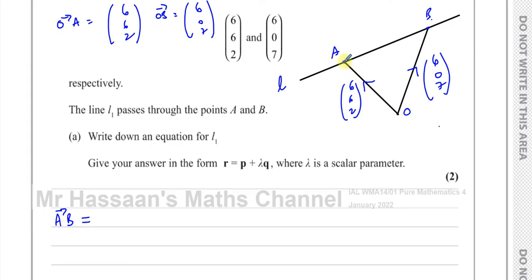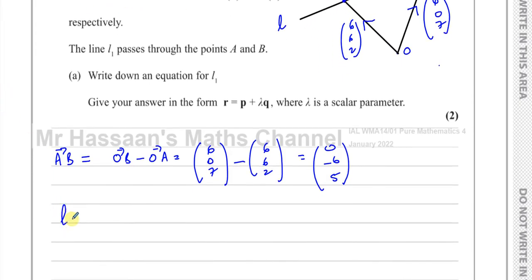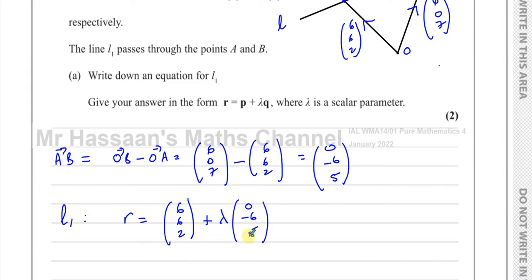The vector from A to B is OB minus OA, so that's (6, 0, 7) minus (6, 6, 2). That gives 6 minus 6 = 0, 0 minus 6 = negative 6, and 7 minus 2 = 5. So the vector AB is (0, -6, 5). The equation of line L1 is R equals (6, 6, 2) plus lambda times (0, -6, 5). This could also use (0, 6, -5) or any multiple — so this is the vector equation of line L1.